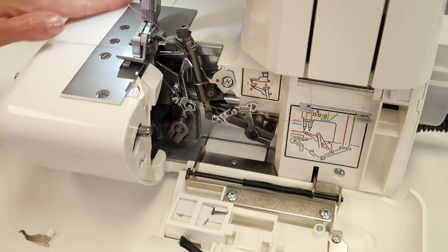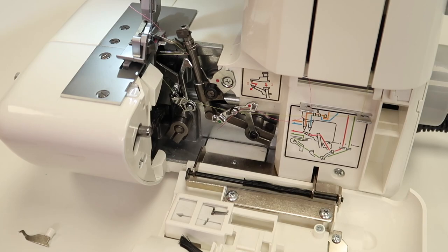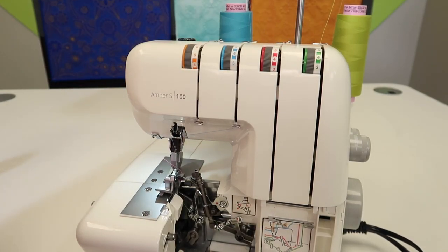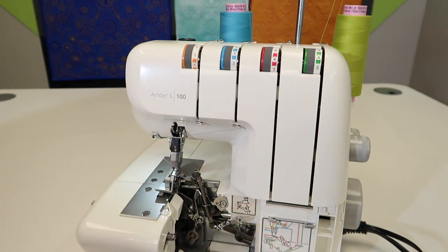This little tail will shimmy out later, and I'm going to go ahead and remove the thread I am not using. We are using right now the right needle, which is the blue thread, and the lower looper, which is going to be the green.